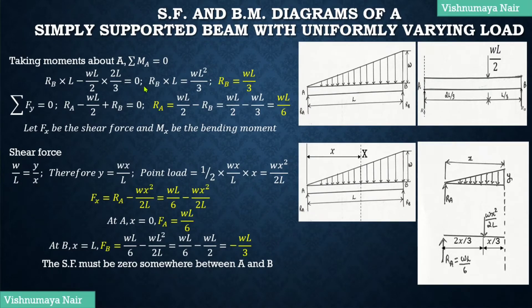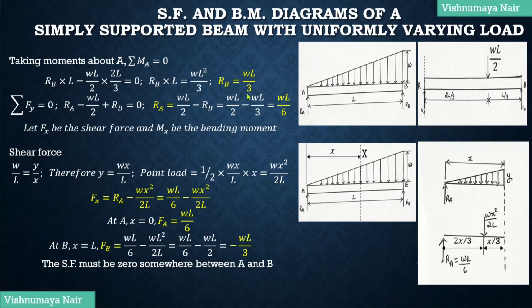Therefore, Rb times L will be equal to wL²/3. Cancelling out terms, Rb will be equal to wL²/3L, which equals wL/3.